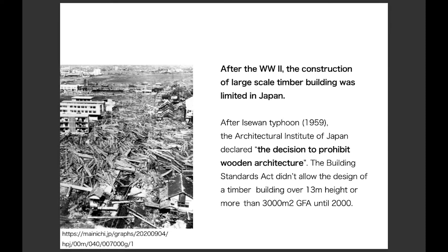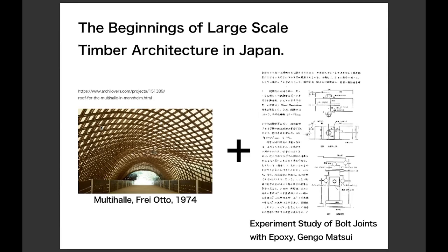To understand the importance of the Oguni project, some historical context is needed. After World War II, the construction of large-scale timber buildings was severely limited in Japan — Japanese people had a trauma that their homes were destroyed by bombs. Timber buildings were also frequently damaged by natural disasters. After the Isewan Typhoon disaster in 1959, the Architectural Institute of Japan declared a prohibition on wooden architecture, and the Building Standards Act did not allow timber buildings exceeding 3,000 square meters until 2000. So it was a major challenge to realize a large-scale timber building in the 1980s.